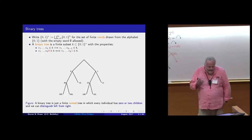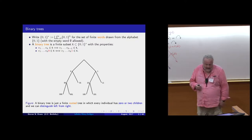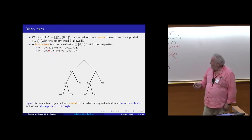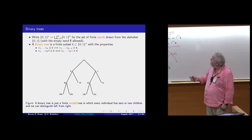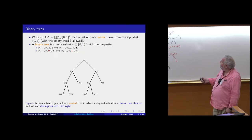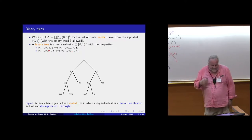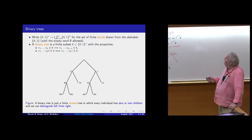The main characters in what I'm going to be talking about today are binary trees. By a binary tree, I just mean a rooted tree where every individual has zero or two children, and we can distinguish between the left child and the right child. There's a very convenient way of representing such objects as sets of finite binary words with certain properties.